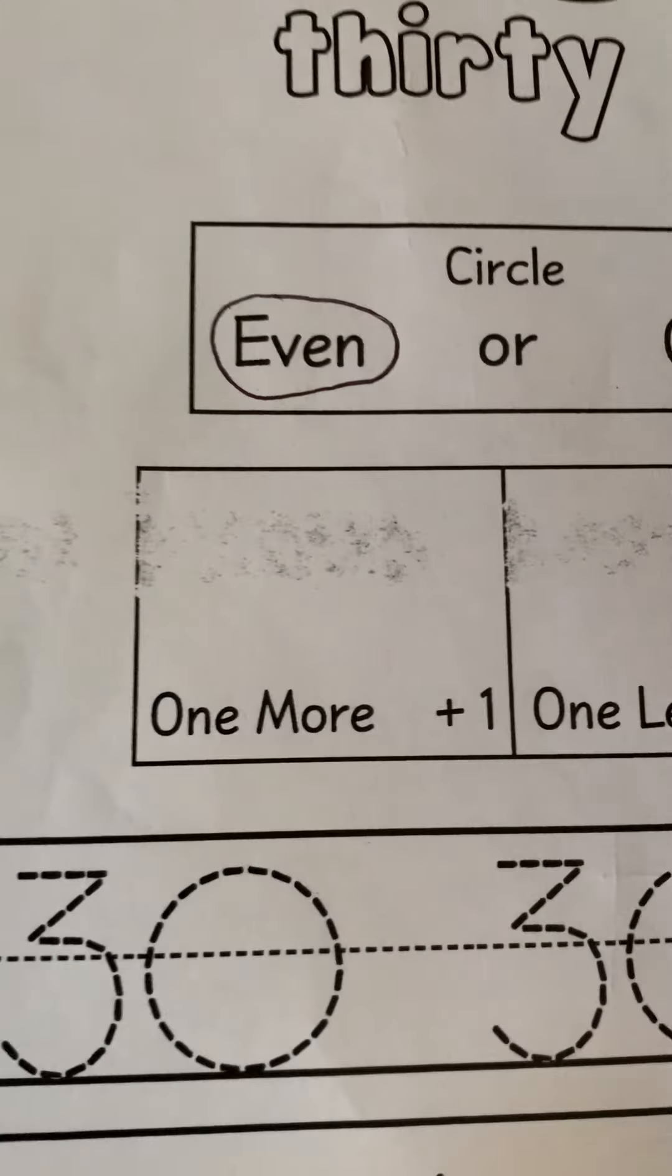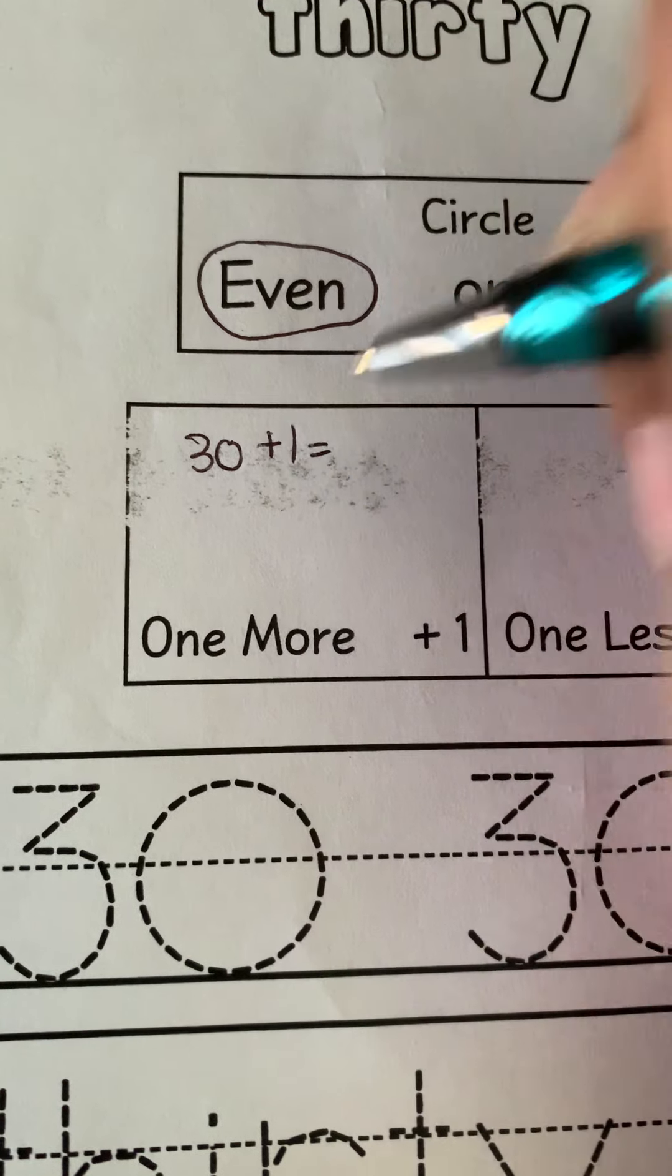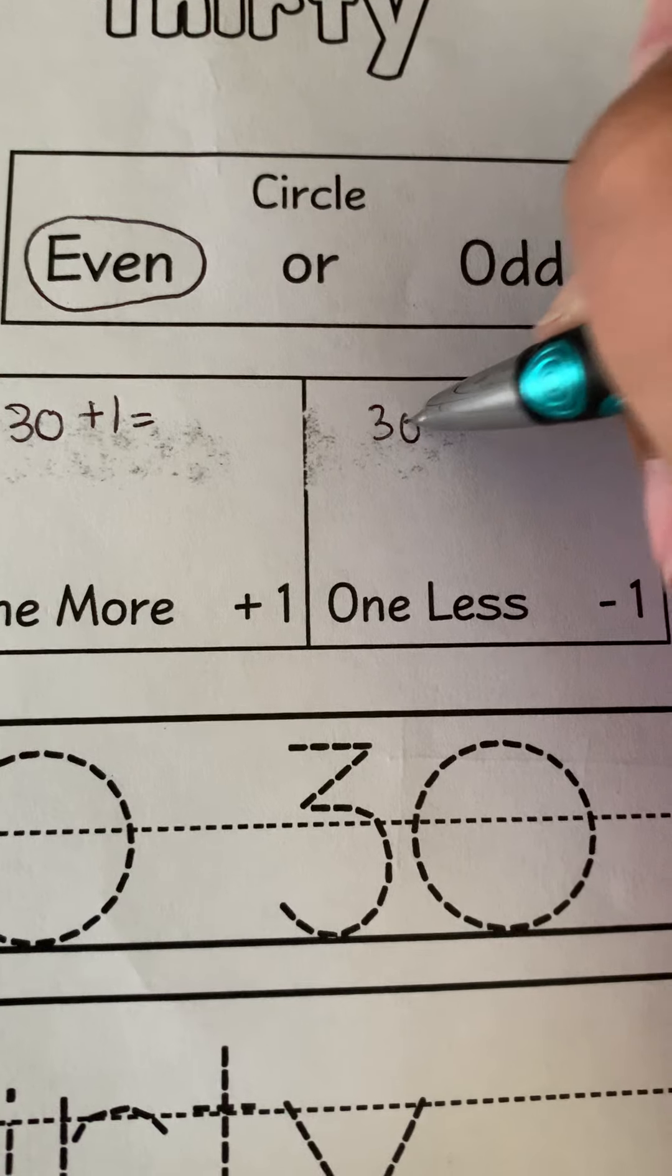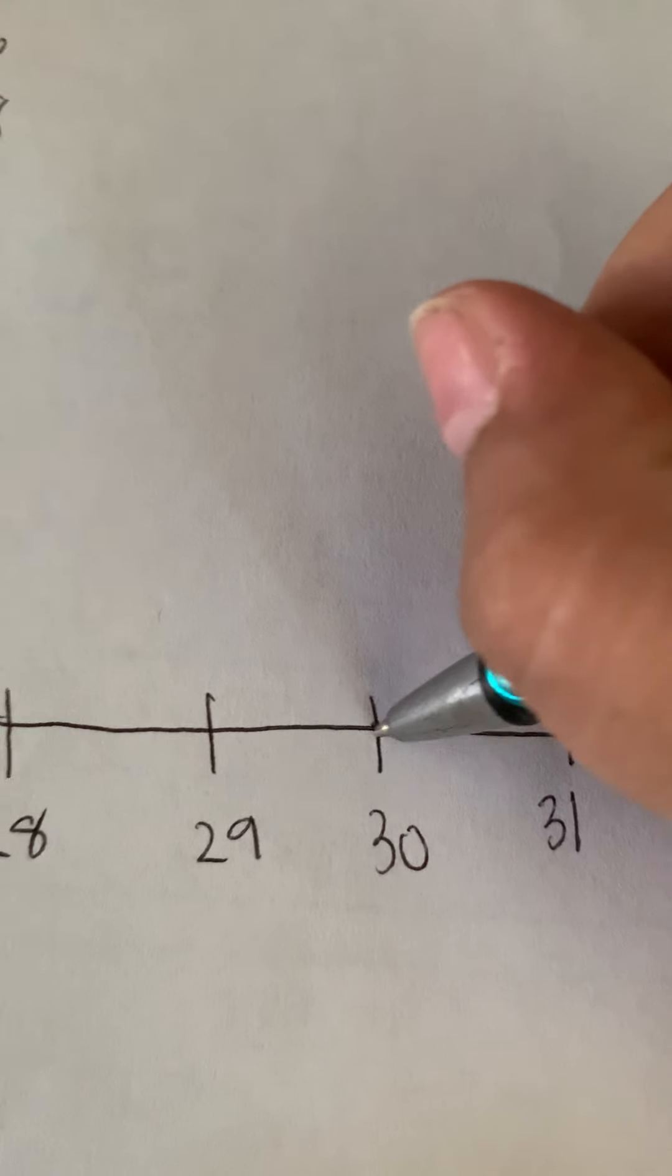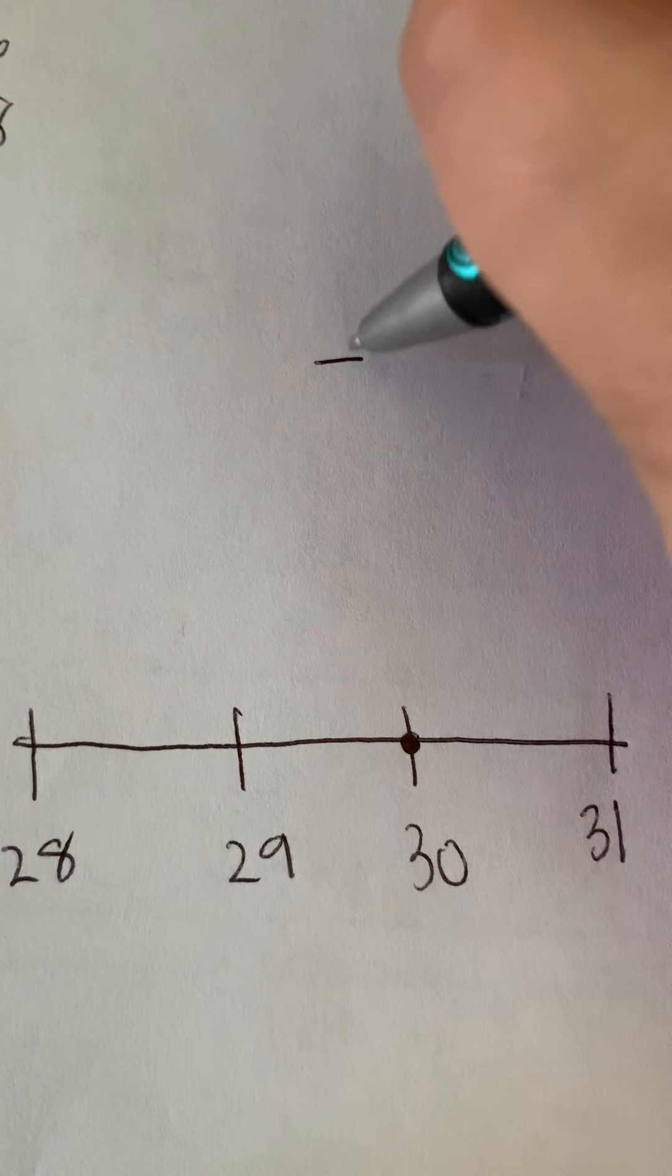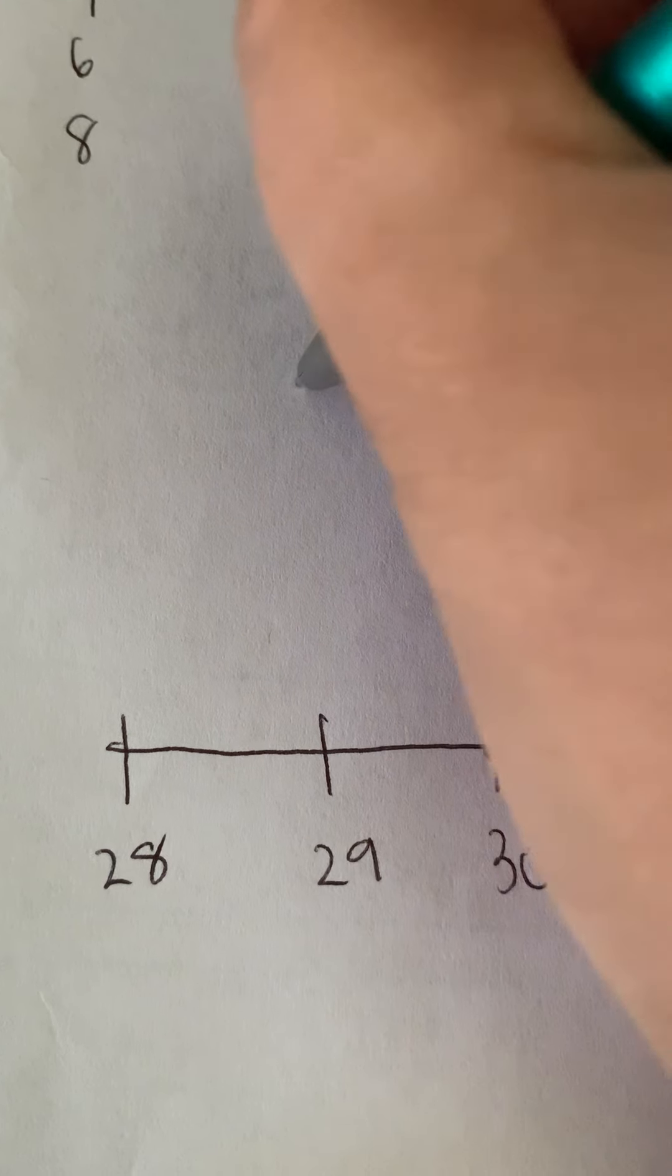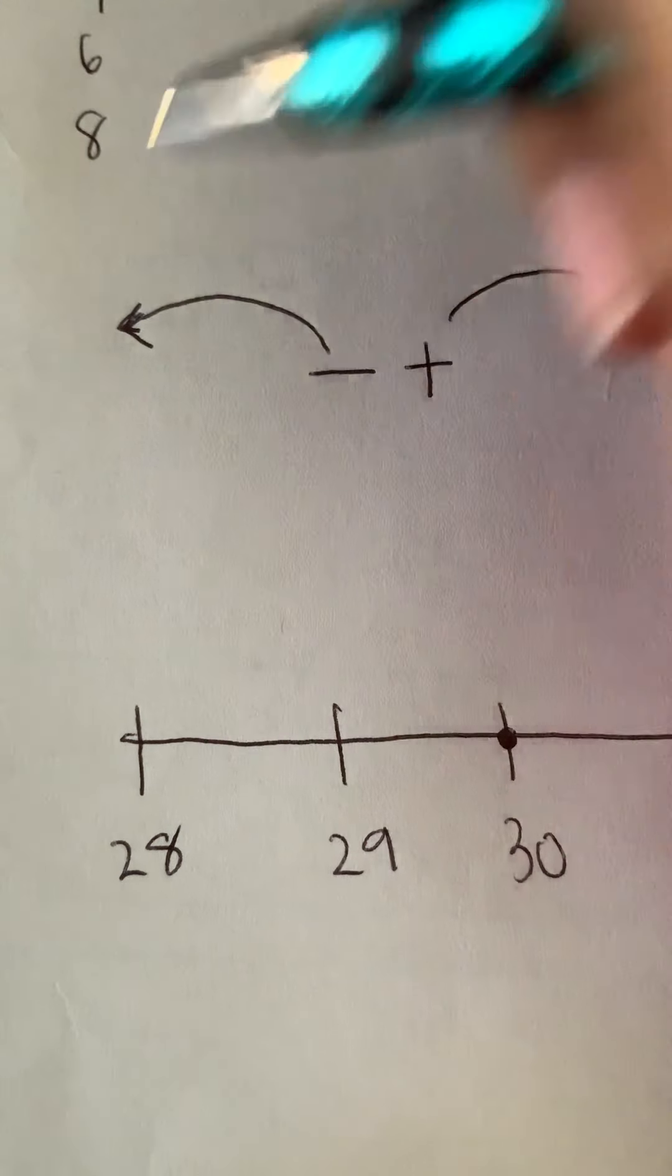And it says it wants one more. So then my equation is going to look like this. 30 plus 1 equals. And then on the one less section, it's going to say 30 take away 1 equals. Let's do the plus 1 first. Remember, I'm always going to start at my number of the week. So I'm going to start at my 30. And it says plus 1. Remember, when we're adding on the number line, we're jumping forward. If we're subtracting, then we're jumping backwards.